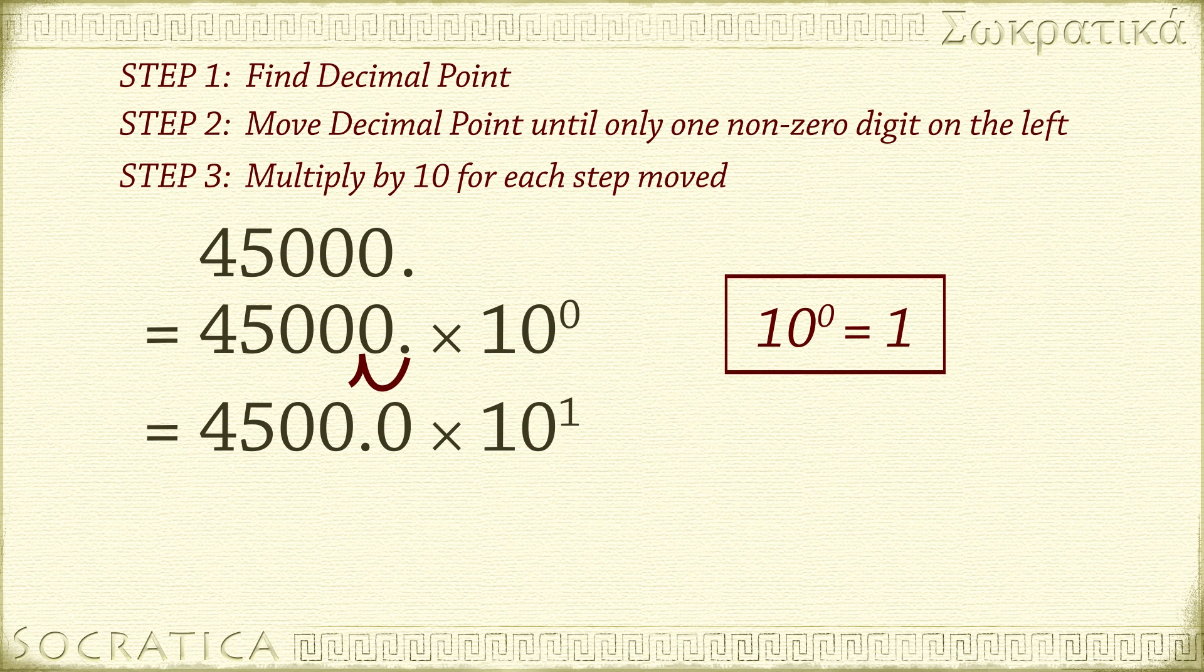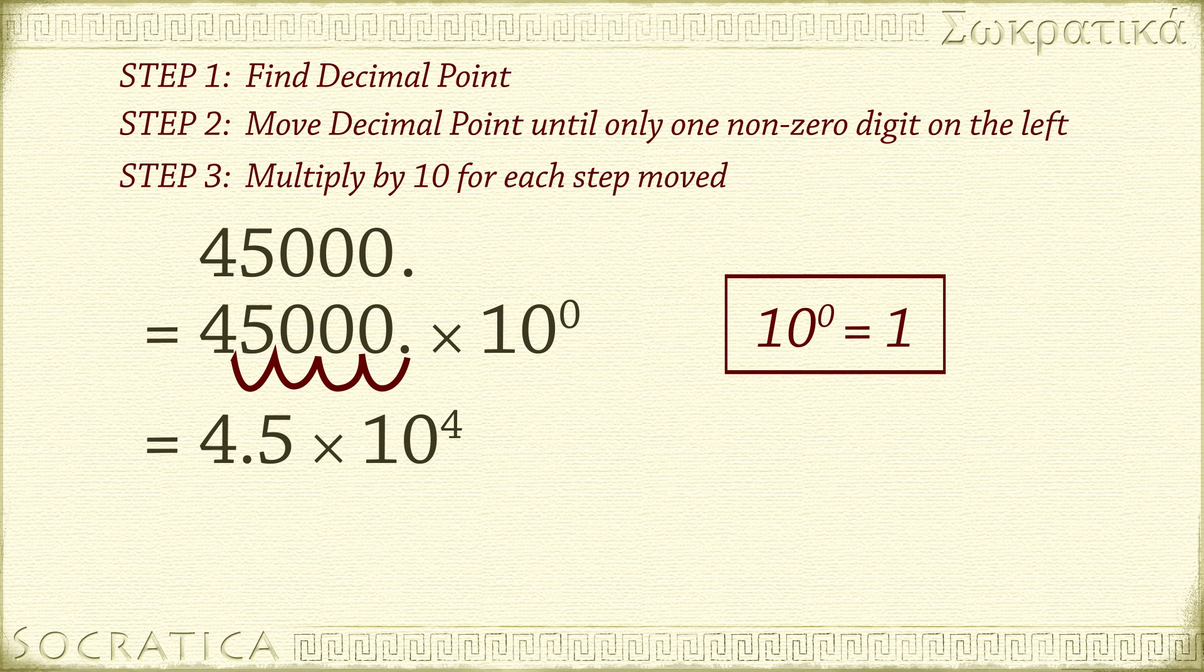Let's move the decimal again. 450.00 times 10 to the one times 10 to the one equals 450.00 times 10 squared. Each time we move the decimal, we need to multiply by another 10. Count up all the tens, and you'll see that to write 45,000 in scientific notation, we moved the decimal point four times. So we need to multiply by 10 four times. We get 4.5 times 10 to the fourth.